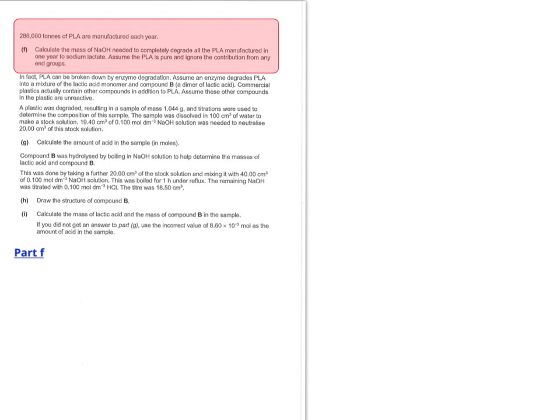So in this, the next part of the question, it says 286,000 tonnes of PLA are manufactured each year. So it's worth remembering, if you're doing any mole calculations involving tonnes, it needs to be converted back to grams. So one tonne is 10 to the power of 6 grams, so it's a million grams. So that means that 286,000 tonnes equals 2.86 times 10 to the 11 grams.